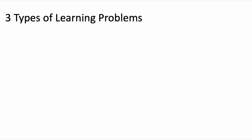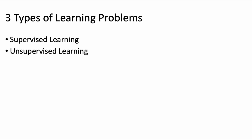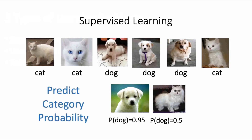We went over three types of learning problems that machine learning and deep learning models solve, which are supervised, unsupervised, and reinforcement learning. Supervised learning is where you have a training data set that has labels for each training example. The labels can represent categories or be numerical values, but in both cases the model's goal is to learn to predict these labels.